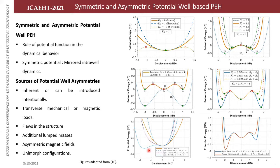Asymmetric monostable, asymmetric bistable, and asymmetric tristable potential wells are modeled. Sources of asymmetries can be natural to the system or intentionally introduced — due to transverse mechanical or magnetic loads, flaws in structure such as non-homogeneity, additional lumped masses with an offset center of gravity, or asymmetric magnetic fields introduced by varying spacing between base magnets, distance between tip and base magnets, or inverse configurations.